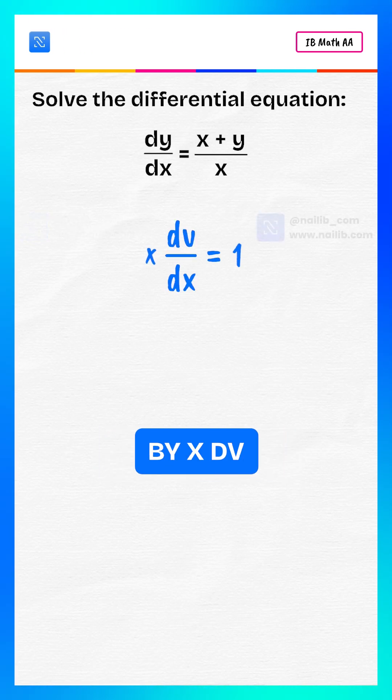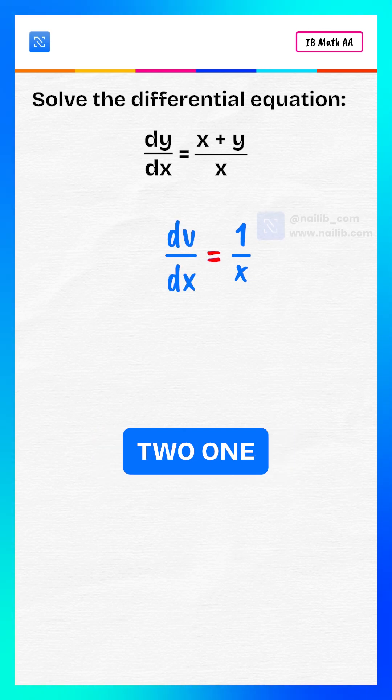Now divide both sides by x. dv/dx equals 1 divided by x.